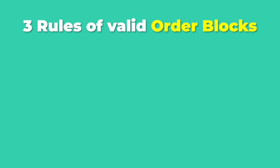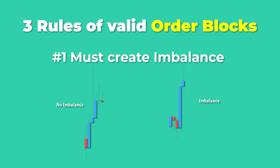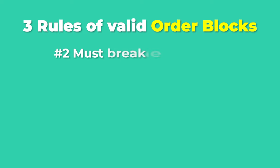Three rules of valid order blocks. Rule one: must create imbalance. This happens when we have a drastic move and we have a gap between the two candles. Here is an example of imbalance versus no imbalance — on the right, imbalance; on the left, no imbalance.